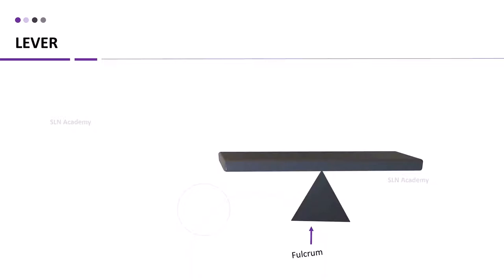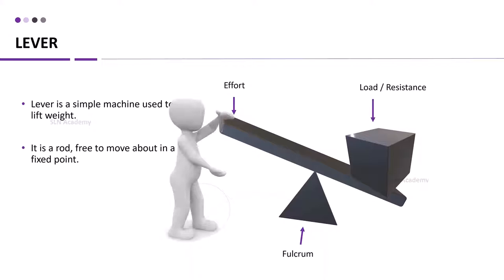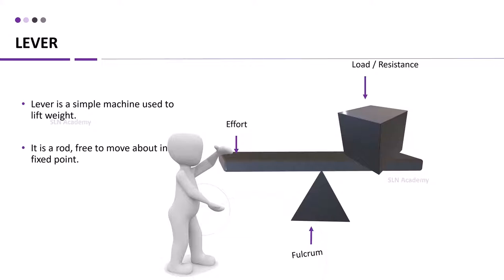Here is the example of a fulcrum in the middle. Now here comes the load or resistance. Lever is a simple machine used to lift weight. It may help you to scoop, to raise, to lift or seesaw. Load or resistance is placed at one end of the rod. To lift this load or resistance, we need to put some effort.